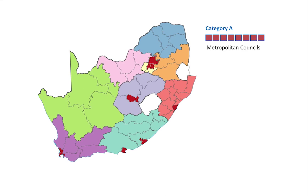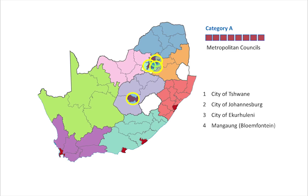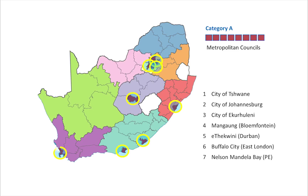Metropolitan councils exist in the eight biggest cities in South Africa: City of Tshwane, City of Johannesburg, City of Ekurhuleni, Mangaung, eThekwini, Buffalo City, Nelson Mandela Bay, and City of Cape Town.